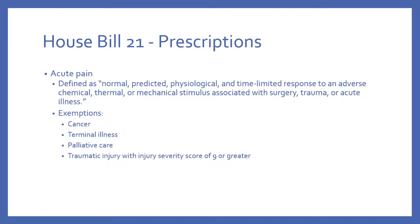Regarding what needs to be on prescriptions: first, some definitions. Acute pain is defined as a normal, predicted, physiological, and time-limited response to an adverse chemical, thermal, or mechanical stimulus associated with surgery, trauma, or other acute illness. Exemptions include cancer, terminal illness, palliative care, or patients with a traumatic injury severity score greater than nine. It's important to exempt these patients because they'll have much more chronic pain associated with their diseases and we don't want to limit how much they can get when they have legitimate needs.